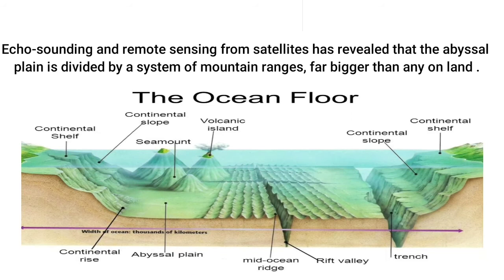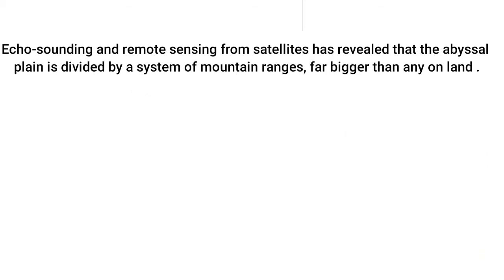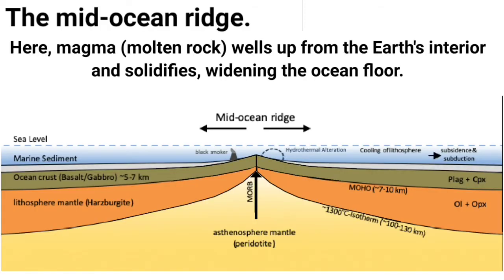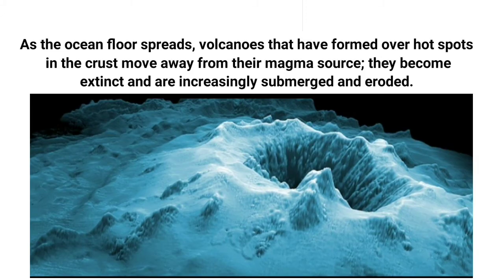The abyssal plain is divided by a system of mountain ranges far bigger than any on land — the mid-ocean ridge. Here, magma wells up from the Earth's interior and solidifies, widening the ocean floor. As the ocean floor spreads, volcanoes form over hot spots in the crust.